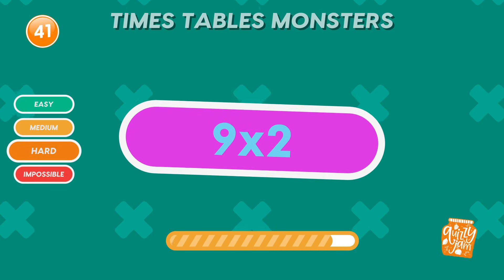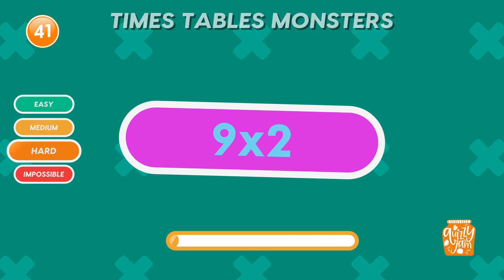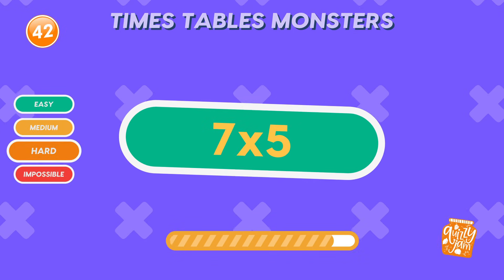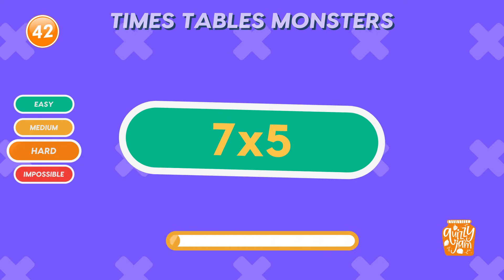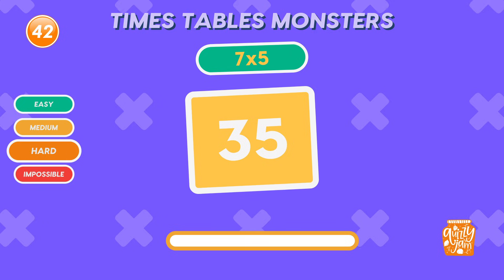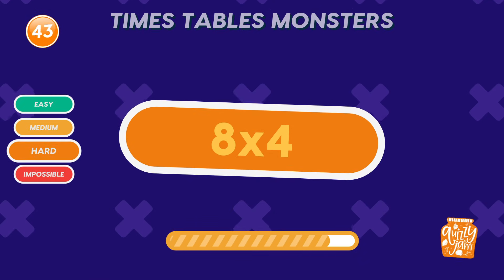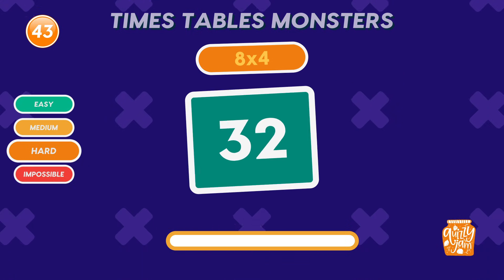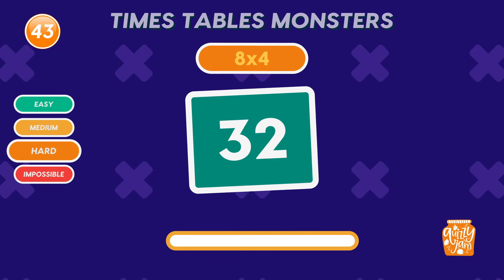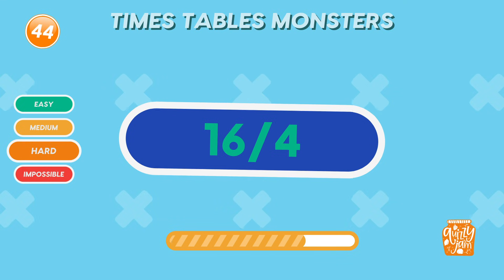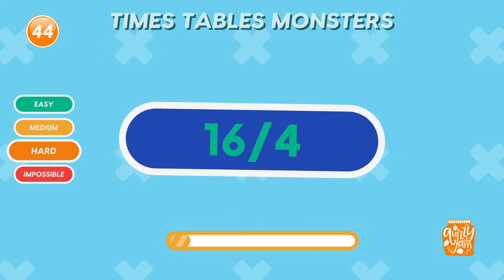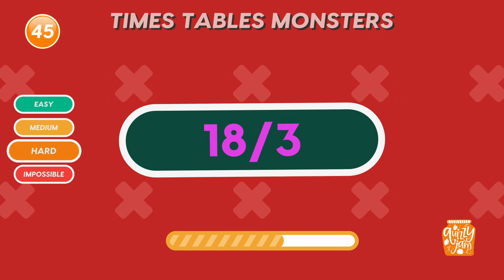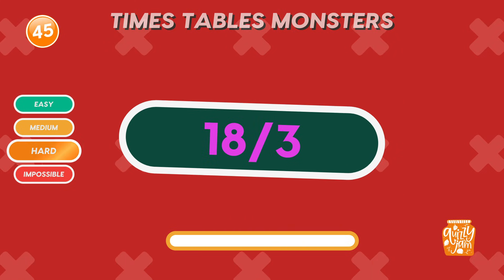What is 9 times 2? 18. Awesome! You're so smart! What is 7 times 5? 35. That's correct! You're a math master. What is 8 times 4? 32. Woohoo! You're thinking fast! What is 16 divided by 4? 4. Fantastic work! What is 18 divided by 3? 6. You got it!